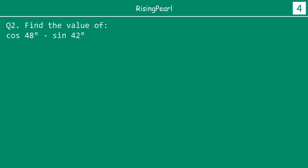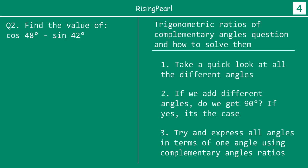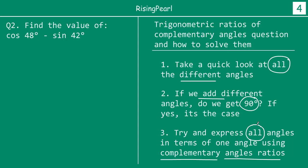Let's take a look at one more example: find the value of cos 48° minus sin 42°. Again, our strategy is to look at all the angles involved. If we add 48 and 42, we get 90 degrees, so these are complementary angles, and we need to apply complementary angle ratios to express all angles in terms of one angle.